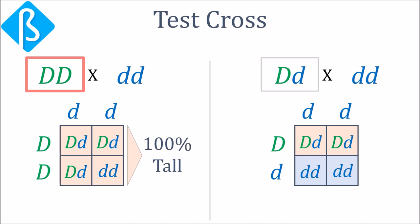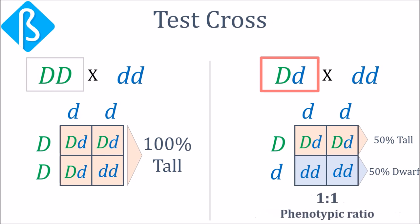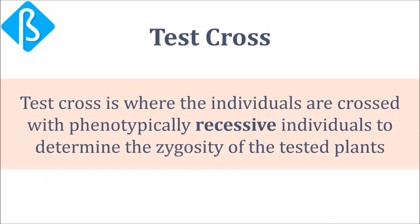If it gives 100% tall plants, the tested strain is proven to be homozygous. If it gives 50% tall and 50% dwarf plants, that is 1:1 phenotypic ratio, the strain is heterozygous. In brief, we can say that test cross is where the individuals are crossed with phenotypically recessive individuals to determine the zygosity of the tested plant.